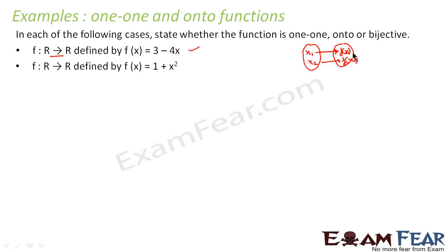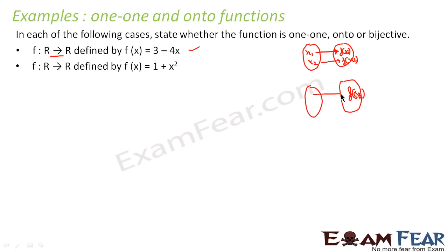That means if these two output values are equal — it is the same point — this implies the two inputs are also the same. If x1 is pointing to f(x) and x2 is also pointing to f(x), and I can prove that both x1 and x2 are actually the same, there is only one mapping, not two. Then that is one-to-one.